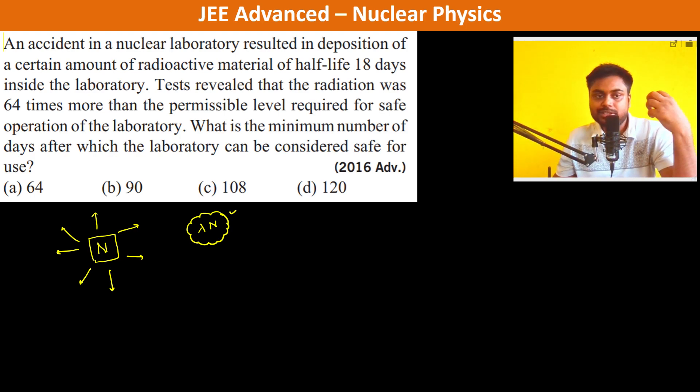Now, it is said that it is 64 times more than permissible. So after 18 days, that is half-life, it is going to be lambda into N by 2. This is in 18 days, but now it has just reduced to 1 by 2 only.